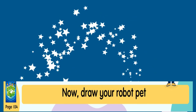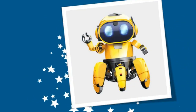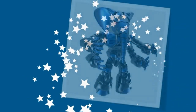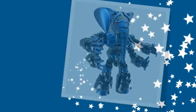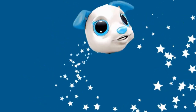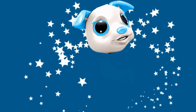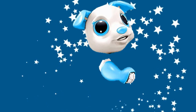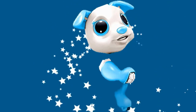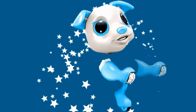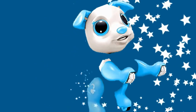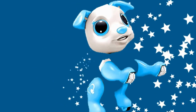Now draw your robot pet. Listen again and draw your own robot pet. Close your eyes. Imagine a robot — a beautiful robot pet. Here's the head, and here are the ears. Here's the right arm and the left leg. Here's the left arm and here's the right leg. Now draw your robot pet.